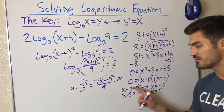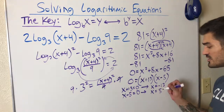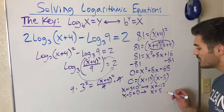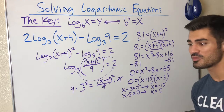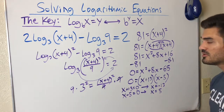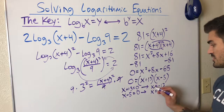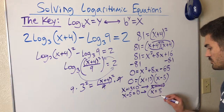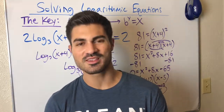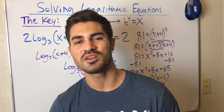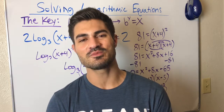Remember, a negative solution doesn't automatically get thrown out — you always plug it back in. A negative value added to something inside the logarithm could still be positive. Plugging in 5 works; plugging in −13 does not. So x = −13 is crossed out and the solution is x = 5. Hopefully this video helped — leave questions in the comments, hit like and subscribe, and keep flexing those brain muscles!